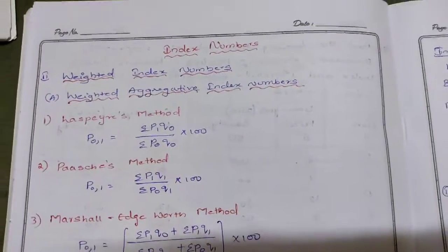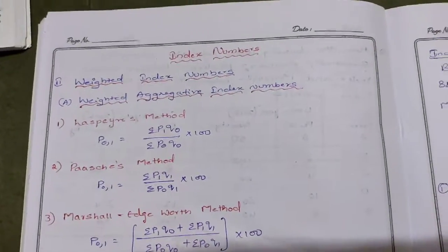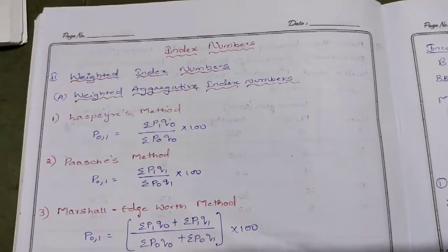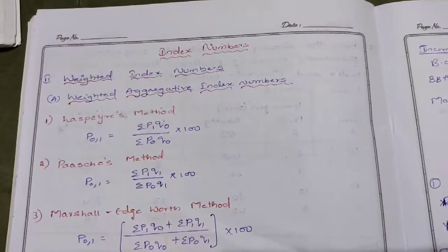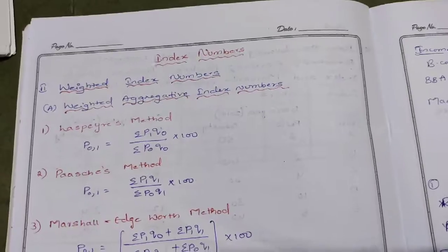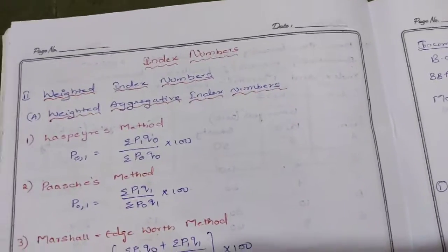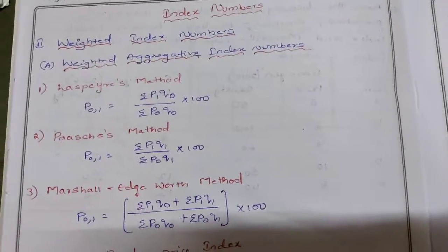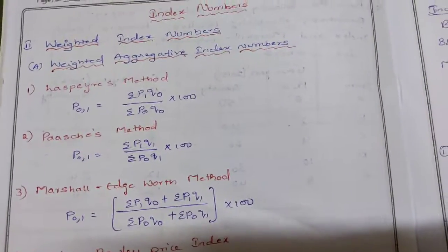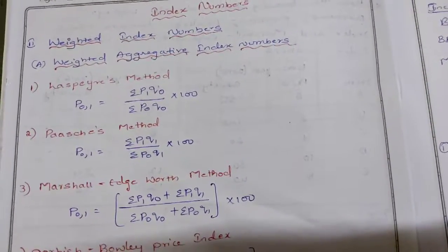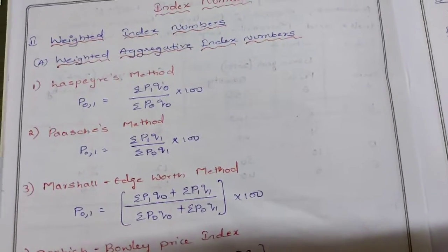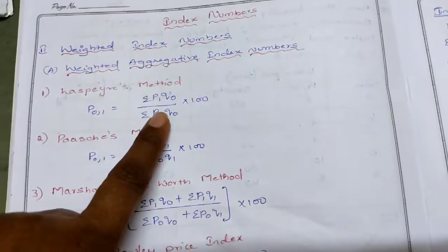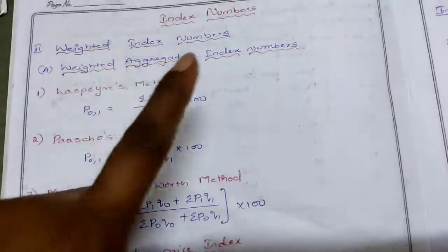Good morning students. Last month we started with index numbers. Under index numbers we have two methods: unweighted index numbers and weighted index numbers — these are price index numbers. We have completed unweighted index numbers. Today we are going to discuss weighted index numbers, which are very important for long questions. I have sent the formulas regarding the weighted index numbers on the 7th.